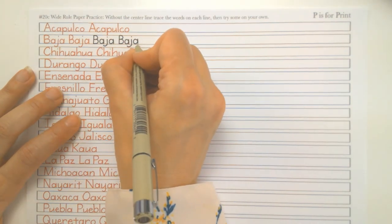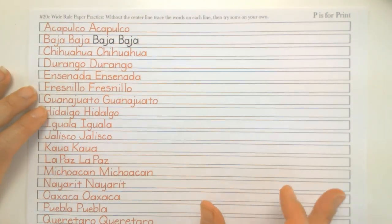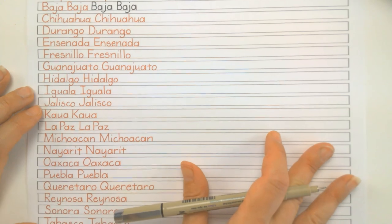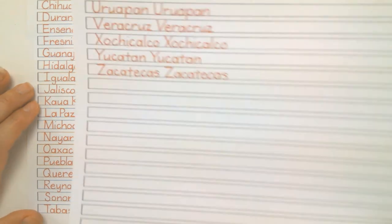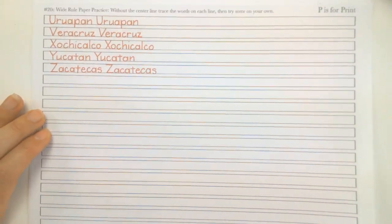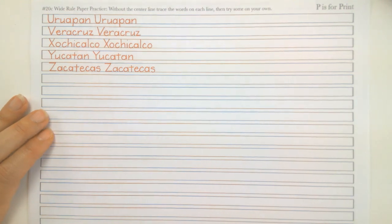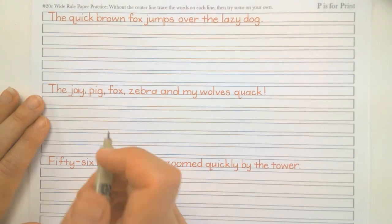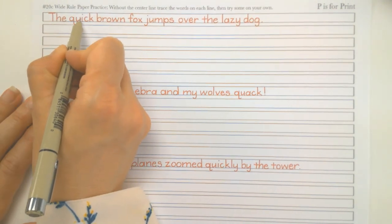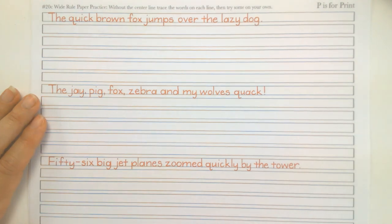And once you get used to reading, you know, your mind likes to have like no space in between. Some of these I cannot pronounce, but they are states and countries, I'm sorry, cities in Mexico. Okay. And then the last one, of course, we have some more pangrams for you. And you can practice not only the letter spacing without the center line, but also the word spacing. So this could be a whole other day for you.